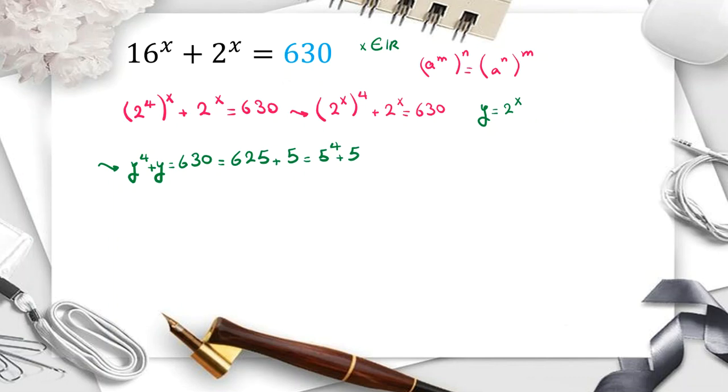Or you could also check y. y equal to 1, 2, 3, 4. It is smaller up to 4 than 630. But if you check y with 5, we will see it's okay. So y equal to 5 is one answer, and we know y is 2 to the x.